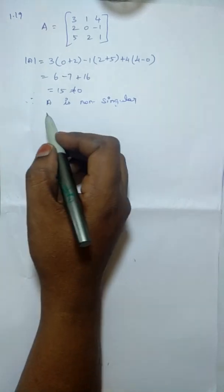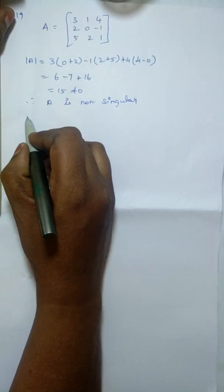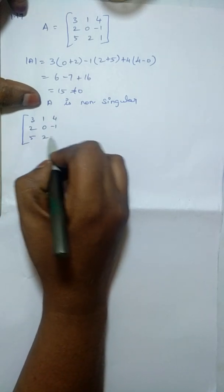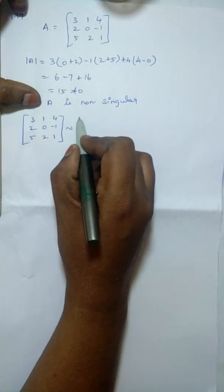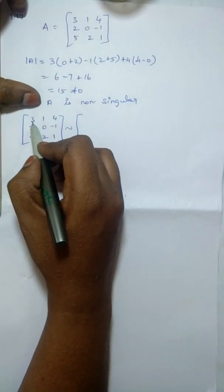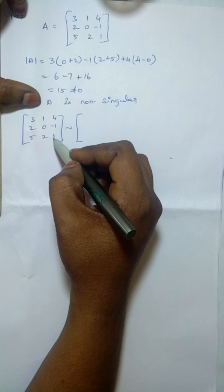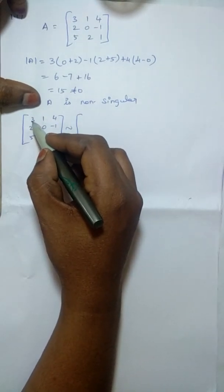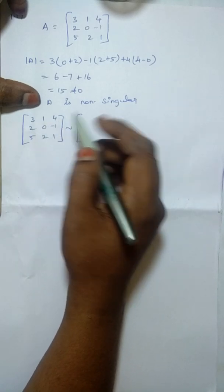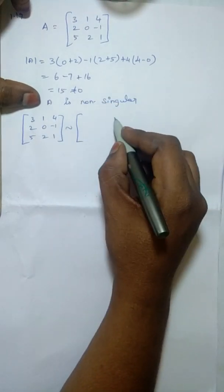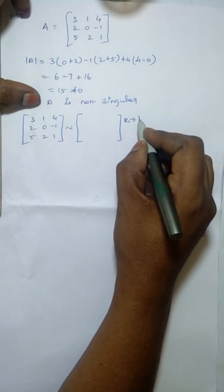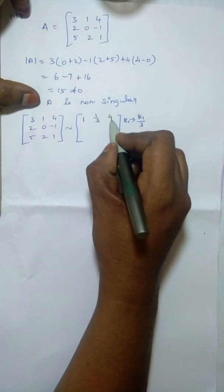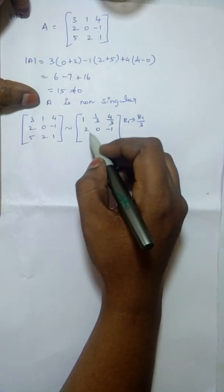Next, we will reduce the matrix to the identity matrix. So the given matrix is [3,1,4 / 2,0,-1 / 5,2,1]. R1 implies R1 divided by 3, giving the first row as [1, 1/3, 4/3].